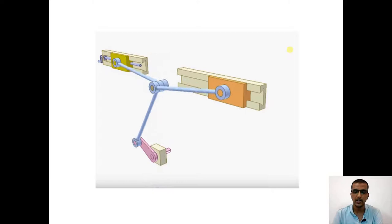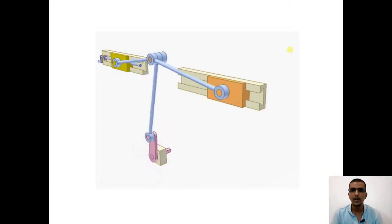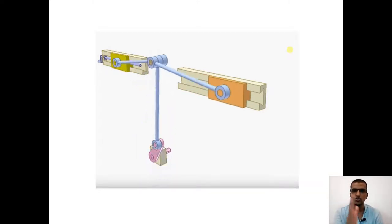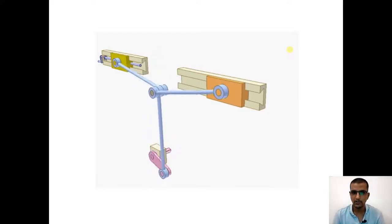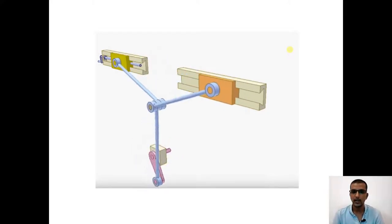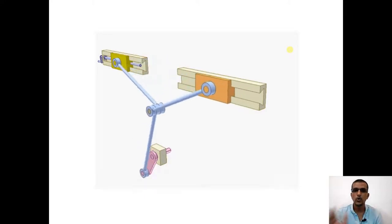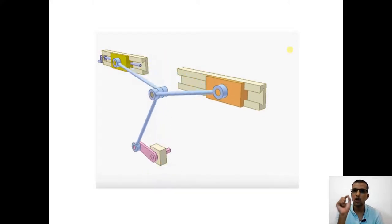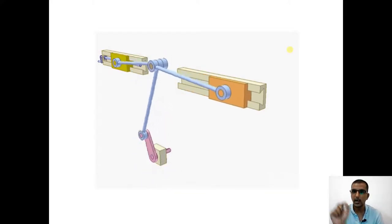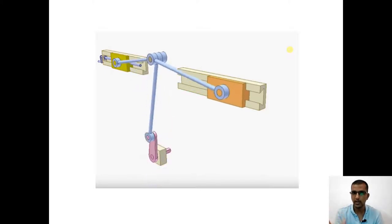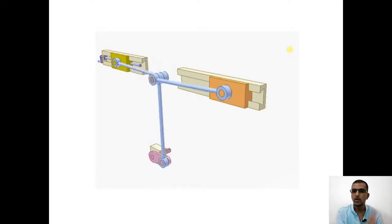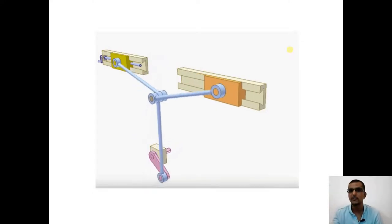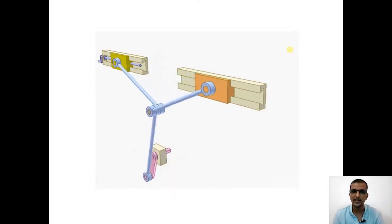Let us go through the animation which gives us a hint of what the mechanism is actually about. Looking at the constructional details, we have a crank in the form of a pink component connected to two links. The orange block can be considered as the output block, where the amount of force created will be as large as infinity. Such a mechanism is called a toggle mechanism.